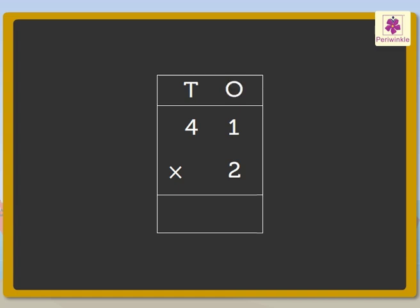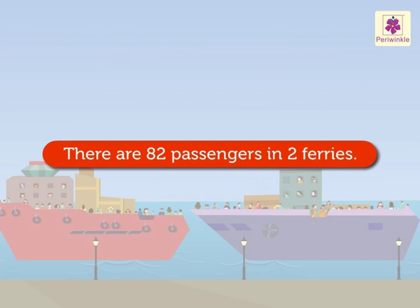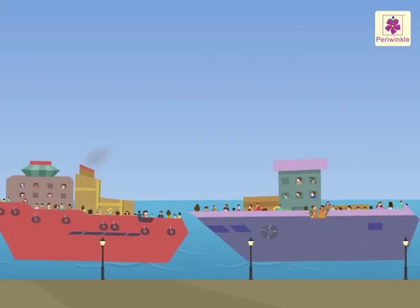1 into 2 is equal to 2 ones. Now multiply the digit in the tens place with the multiplier 2. Therefore 4 into 2 is equal to 8 tens. We found the answer — in totality, the two ferries can carry 82 passengers!